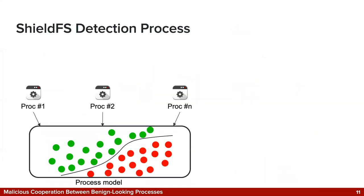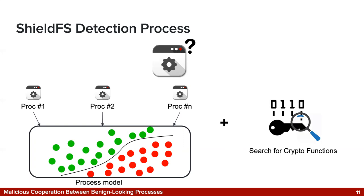There is more complexity to ShieldFS — it also replicates classification models at different timescales to deal with situations where a process begins benign and later becomes malicious via process injection. For detection, the per-process model is applied to every process. For ambiguous situations, ShieldFS also looks at system-level file system activity and attempts to identify cryptographic functions in the process image. However, those last two components are only triggered when a process is flagged as suspicious by the per-process model. So if we break the per-process model, no other factor comes into play.